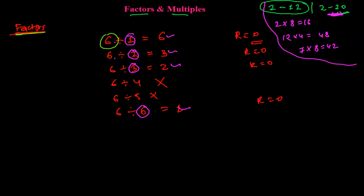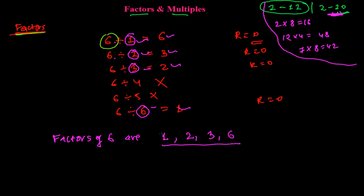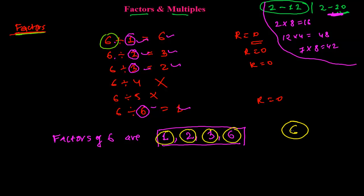So here, factors means those numbers by which you can exactly divide the number. The number is 6, and those numbers which exactly divide 6 are its factors. The numbers marked here — 1, 2, 3, and 6 — all exactly divide 6. So the factors of 6 are 1, 2, 3, and 6, because these four numbers exactly divide 6 with remainder 0.